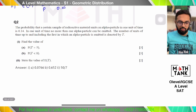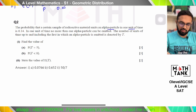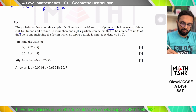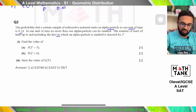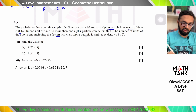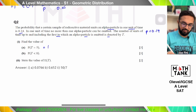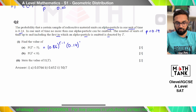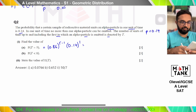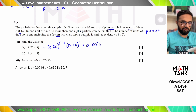Moving on to question 2. The probability that a certain sample of radioactive material emits an alpha particle in one unit of time is 0.14. In one unit of time, no more than one alpha particle can be emitted. The number of units of time up to and including the first in which an alpha particle is emitted is denoted by T. The probability of success is 0.14. Find the probability of T = 5: that's 0.86^(5−1) × 0.14, giving 0.0766.